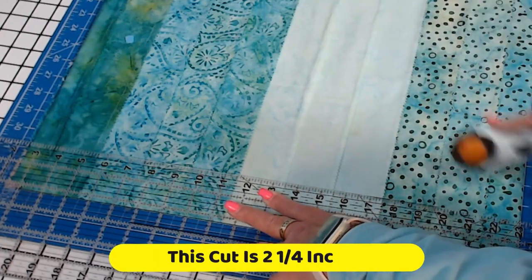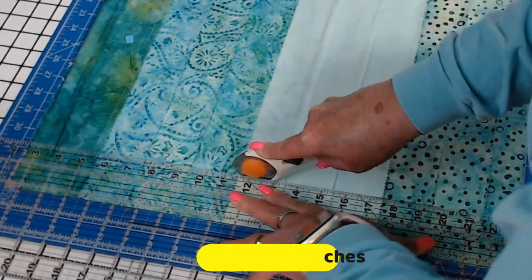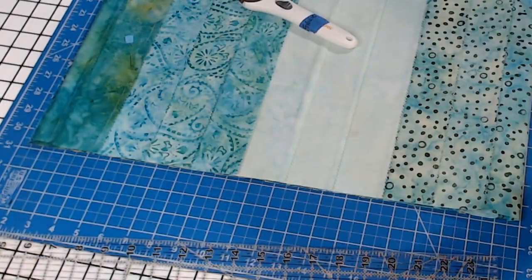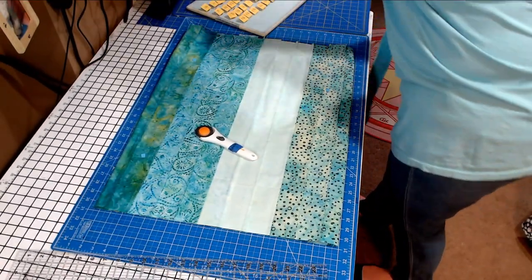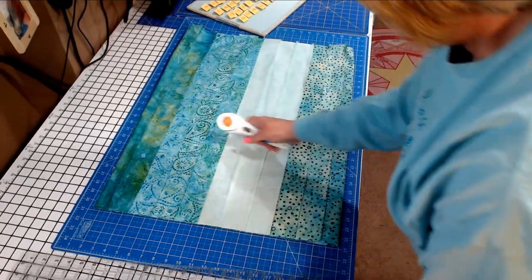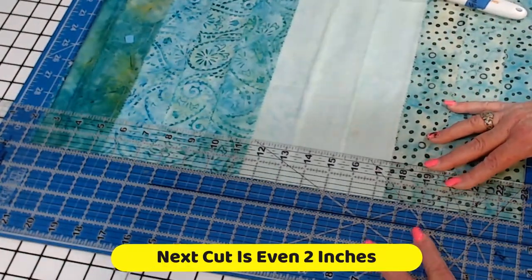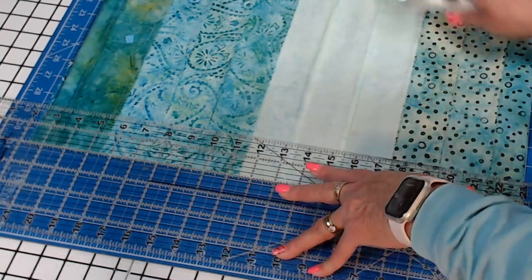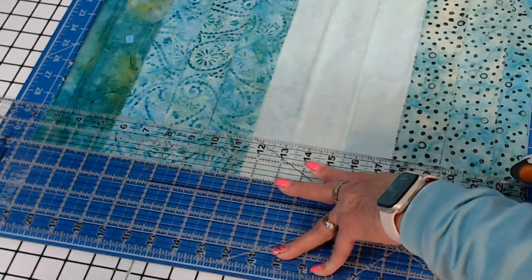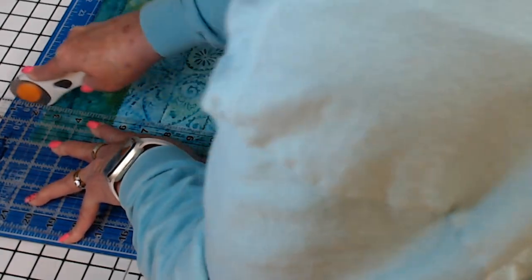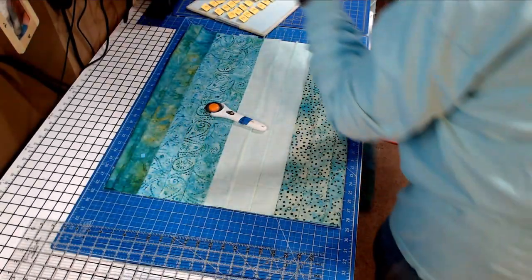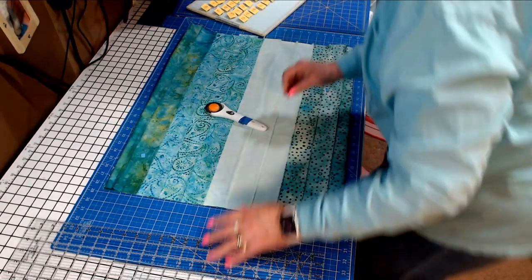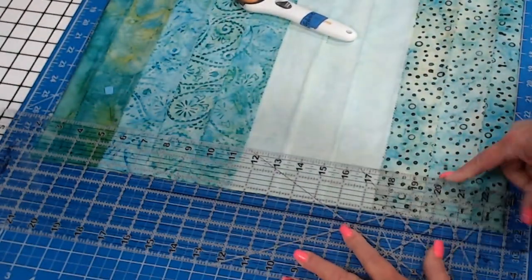This cut's two and one fourth. The next cut is a two inch cut. And keep consistent with keeping it lined up straight across the bottom when you're lining. And as you can see, they're getting thinner and thinner and then we're going to start going back up in numbers. And that's where you're going to start to see the magic happen. And the next one is one and three fourths.